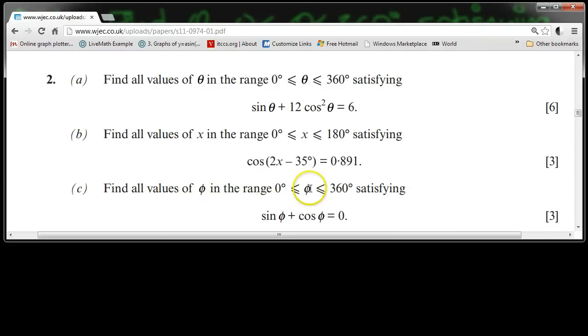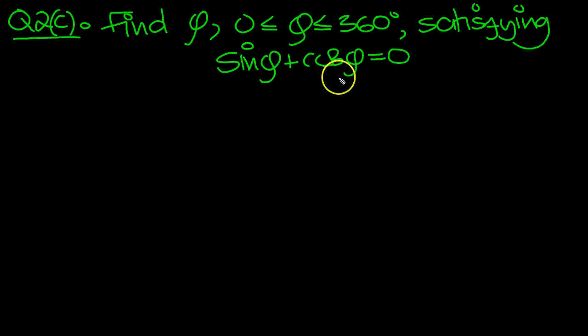Find all values of phi in the range of phi between 0 and 360 degrees, satisfying sine phi plus cos phi equals 0. I've written it out here.